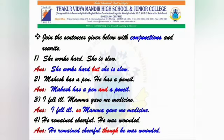Join the sentences given below with conjunctions and rewrite. First: She works hard. She is slow — She works hard but she is slow. Second: Mahesh has a pen. He has a pencil — Mahesh has a pen and a pencil. Third: I fell ill. Mama gave me medicine — I fell ill, so Mama gave me medicine. Fourth: He remained cheerful. He was wounded — He remained cheerful, though he was wounded.